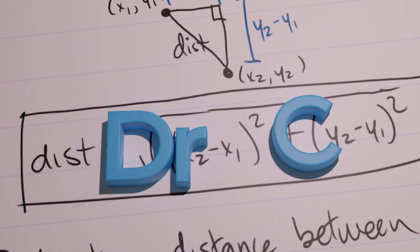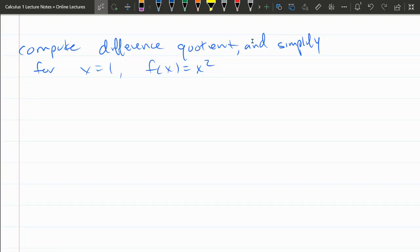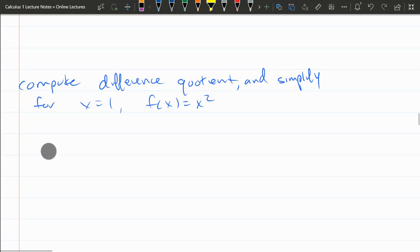We're going to compute the difference quotient and simplify. Our x value is 1, our function is x squared. Now your homework function is probably a little more complicated, this one is a bit more easy.